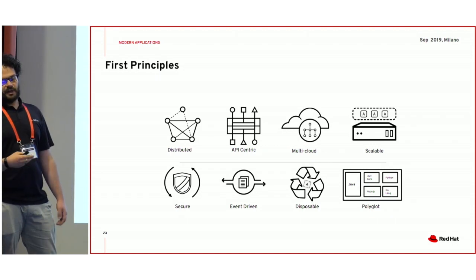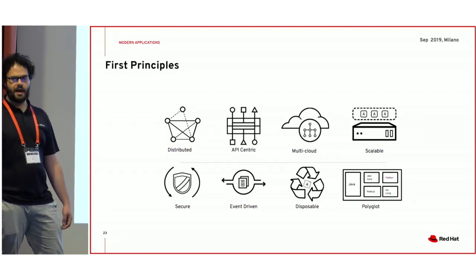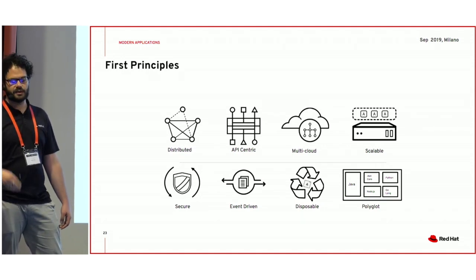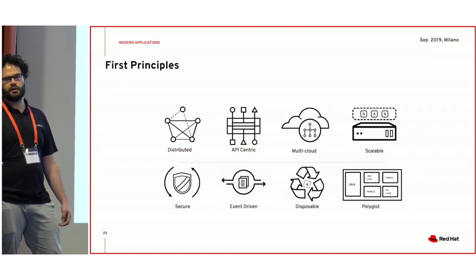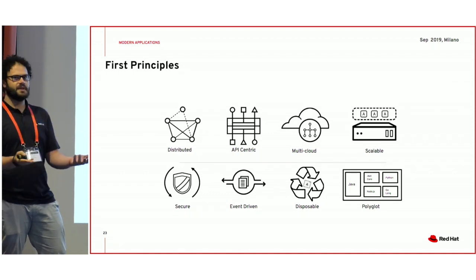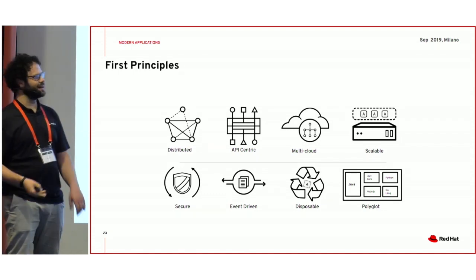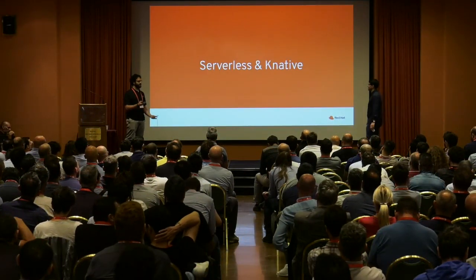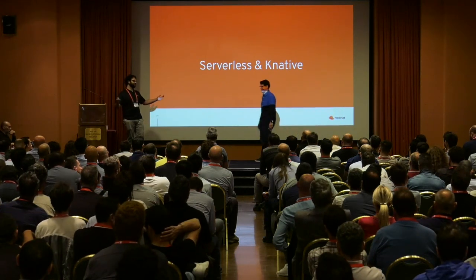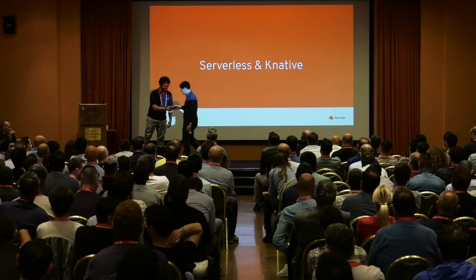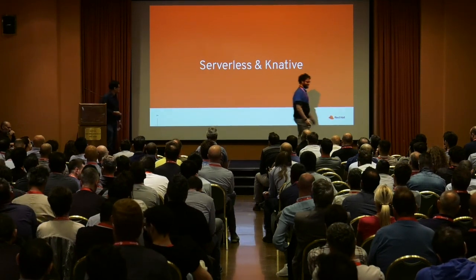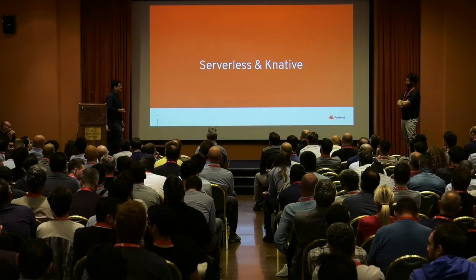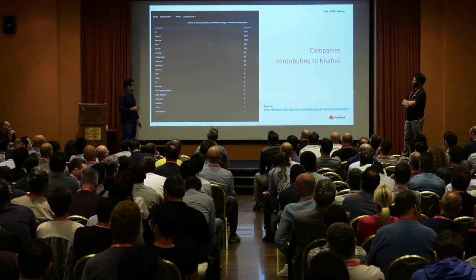Those are the principles of the architecture: it has to be distributed, API-centric, born to be multi-cloud — meaning both public and private clouds — scalable by design, secure, event-driven, disposable, and polyglot. So very, very far beyond CGI bin — we are doing better. I'll hand it over to William, who is probably the most important person in the Knative community. Definitely not, but thanks — that was very nice, by the way, the way you delivered those slides. Thank you for doing that.